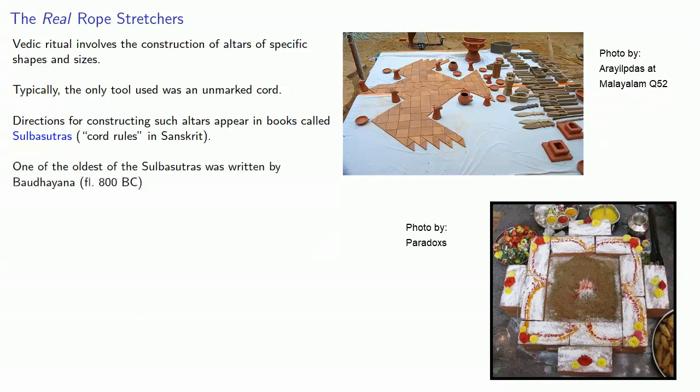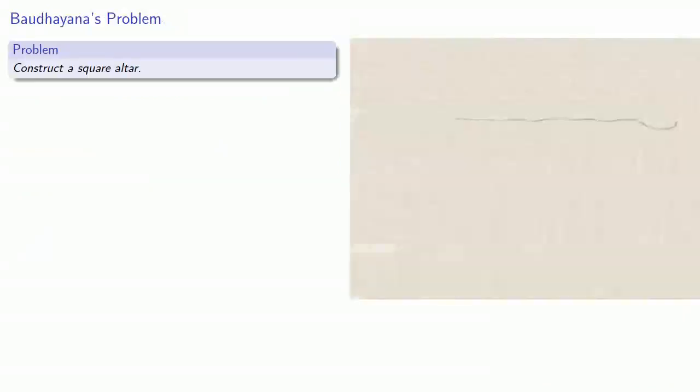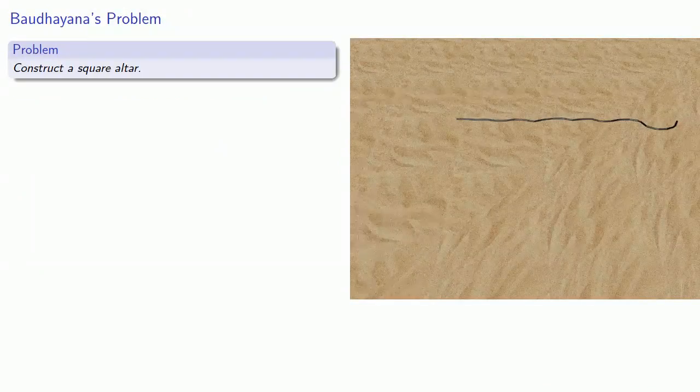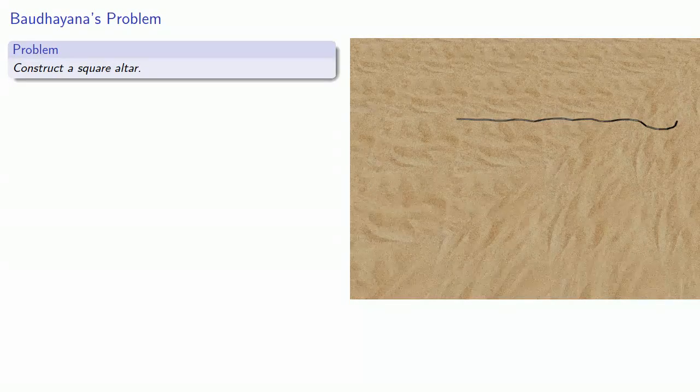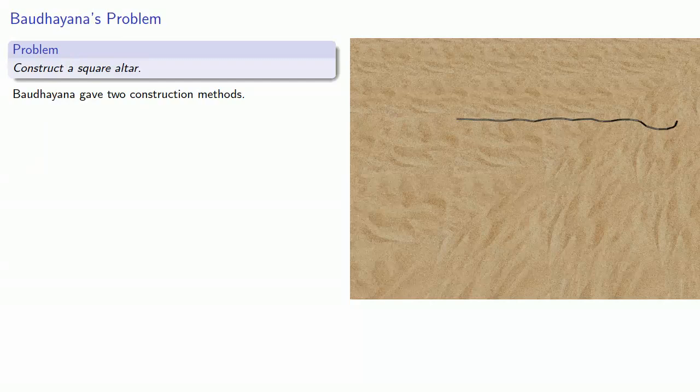One of the oldest of the Sulbasutras was written by Baudhāyana around 800 BC. One of the problems solved by Baudhāyana was to construct a square altar. Baudhāyana gave two construction methods. We'll focus on the second.